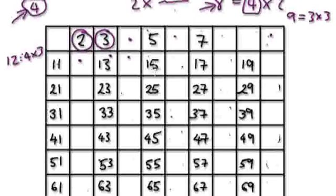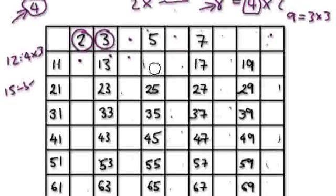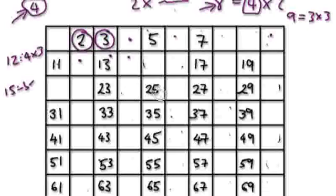So let's look at 15 — you can visualize 15 as 5 times 3. Because 3 is a prime, every multiple of 3 is going to be divisible by 3. So 21 is divisible by 3 because 21 equals 7 times 3 — that can go. And 27 is divisible by 3 because 3 times 9 is 27 — that can go.